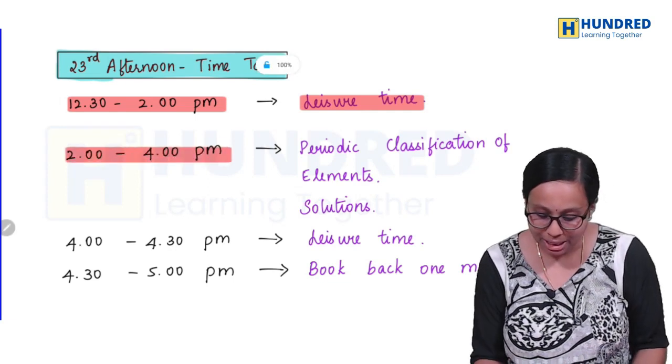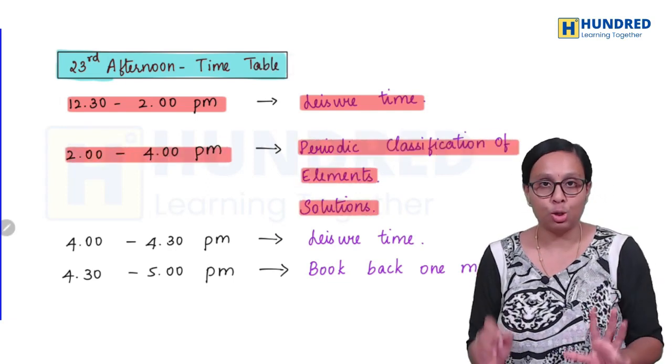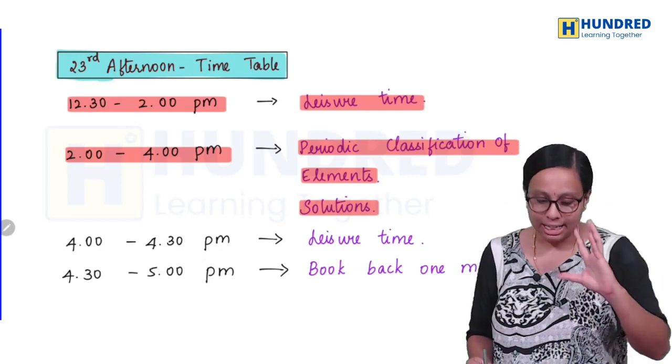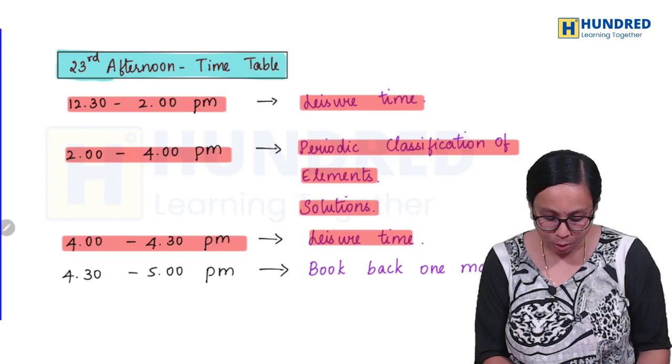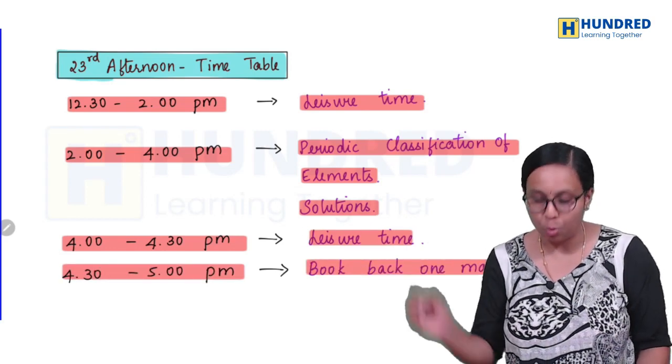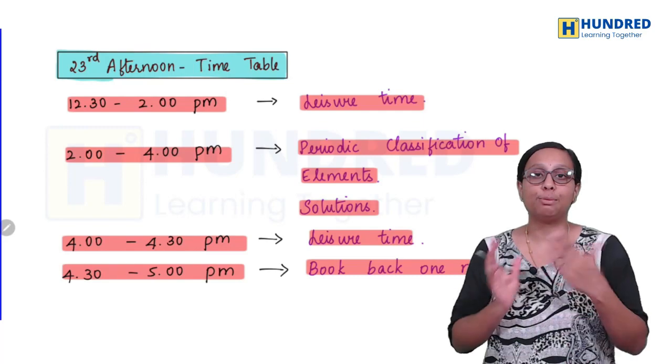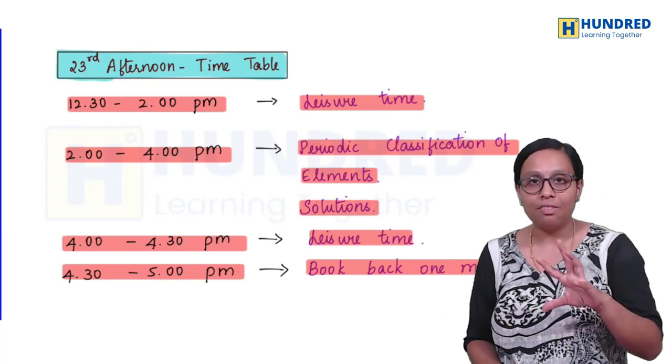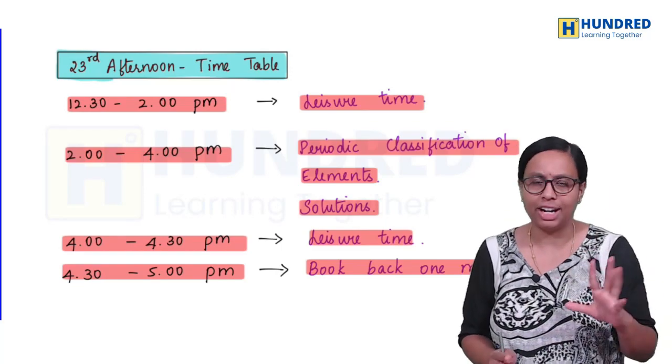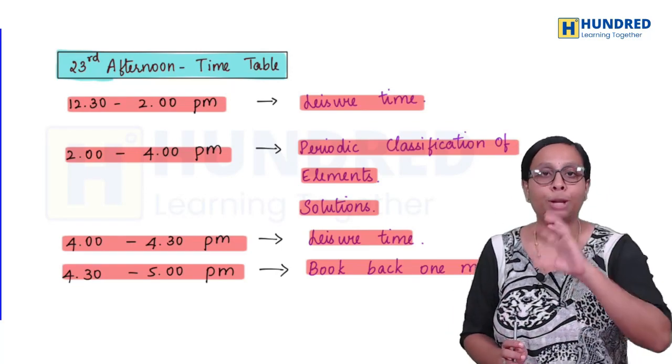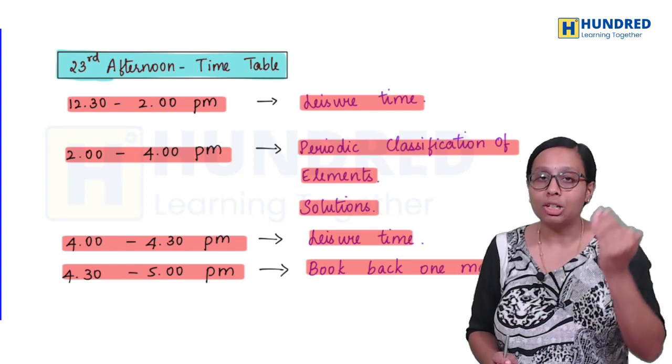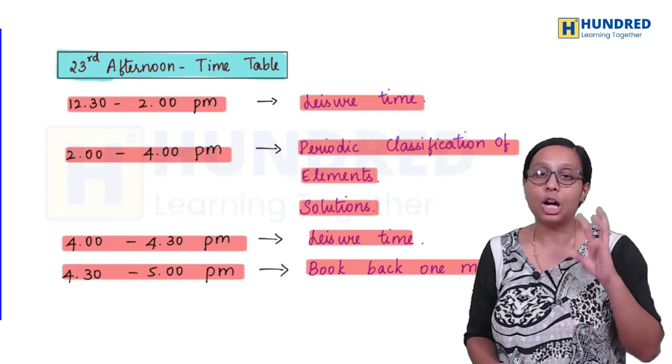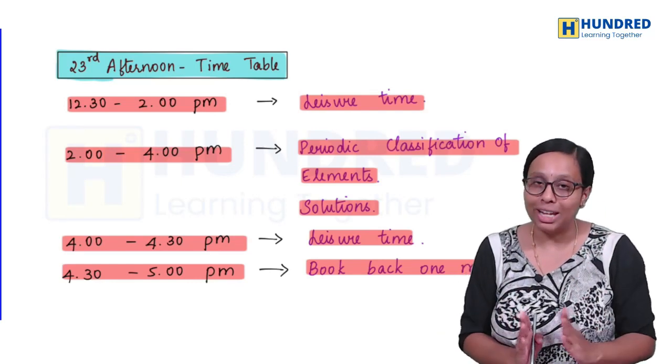2 to 4 PM, Periodic classification of elements and solution chapters. You will cover these. Take a short break. And then 4:30 to 5 PM, book back one marks. We will cover all the concepts in physics and chemistry. Chapter by chapter, do it. When you cover chapters, check the important questions in the video. Give most importance to the book back questions.